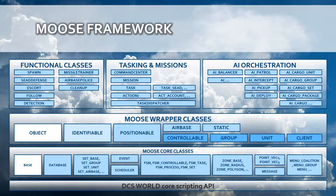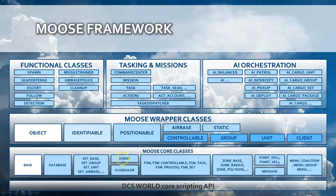Here is a small overview of what the framework comprehends. On top of the DCS World Core Scripting API, the first layer within the Moose framework is the Moose core classes — which group within a defined object or class specific functionality core to DCS: groups, units, air bases, the database of mission objects, an event handler, a scheduler, finite state machines, zones of different types working polymorphically, points, 2D and 3D points, messages, and menu management. These core classes both simplify and extend the DCS API, making your coding much easier.